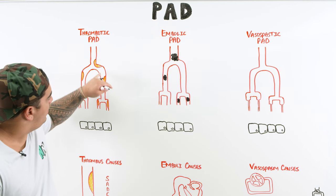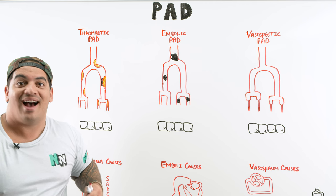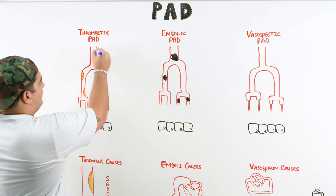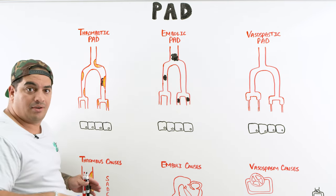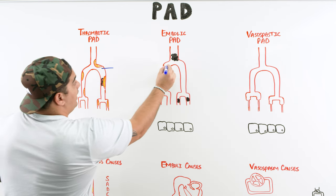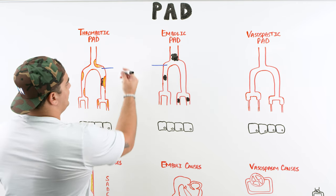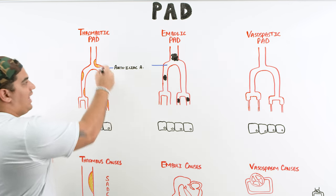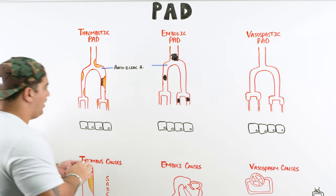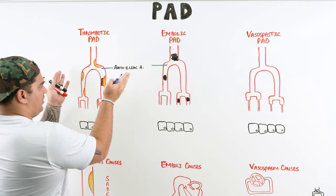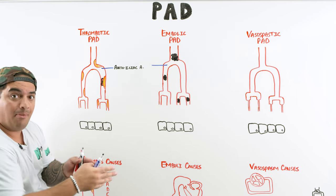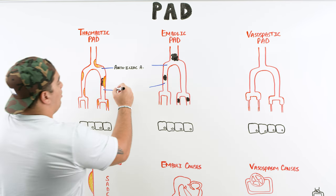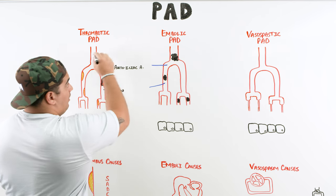What usually happens is there's some type of narrowing of the lumen of the lower extremity vessels that reduces oxygen supply to the tissues. The vessels most commonly affected start at the aorta, which bifurcates into the common iliacs — the aortoiliac arteries — where plaques or emboli commonly get stuck. The external iliac eventually becomes the femoral and popliteal vessels, called the femoral-popliteal arteries, also commonly affected by thrombotic and embolic complications.